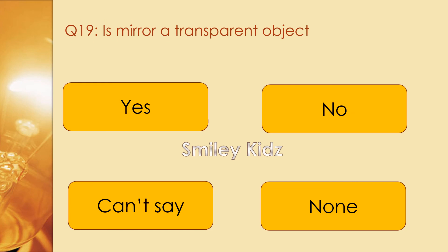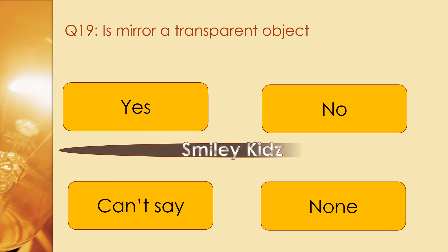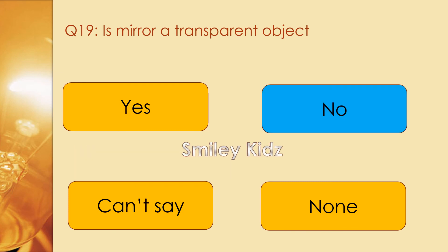Question number 19. Is a mirror a transparent object? Options are yes, no, can't say, and none. The right answer is no. A mirror is not a transparent object.